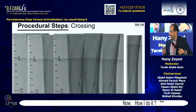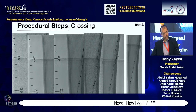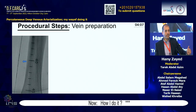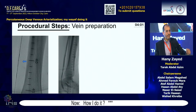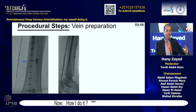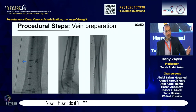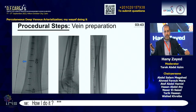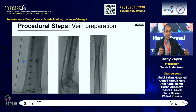With this stable through-and-through wire position, you introduce the forward-cutting valvulotome and lyse the valves throughout the lateral plantar vein and posterior tibial vein. Then you post-dilate with a balloon, usually working from distal to proximal. I try, if the valvulotome crosses, to leave the arteriovenous connection dilation until last.